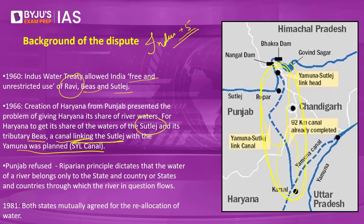When discussions first started in the 1960s, Punjab flatly refused, invoking the riparian principle. The riparian principle states that the water of a river belongs only to the state or country through which it flows — meaning you cannot artificially divert a river to give water to another state, and therefore Punjab did not want to give any water to Haryana.